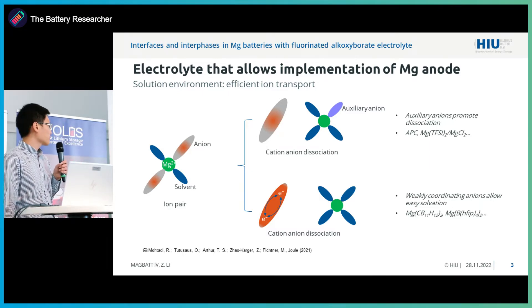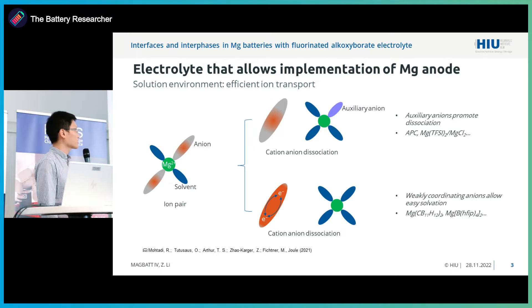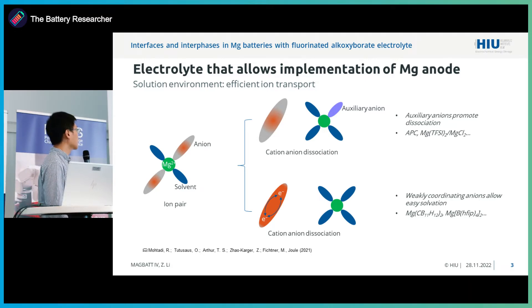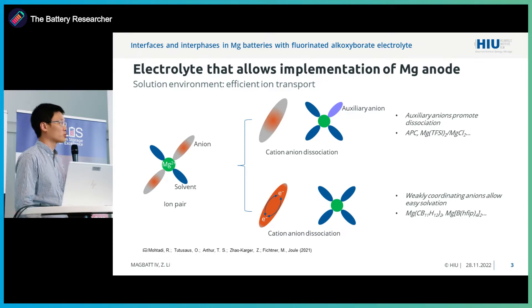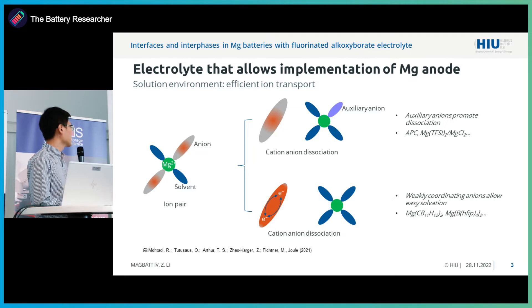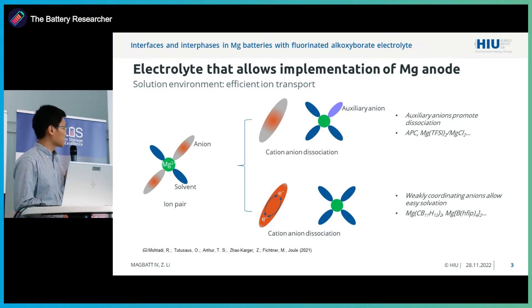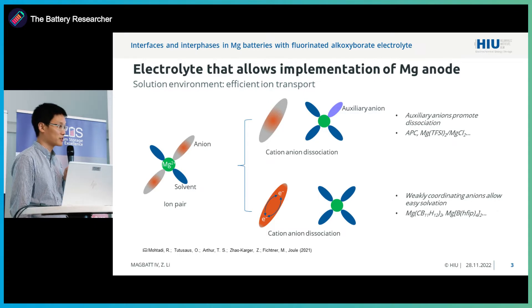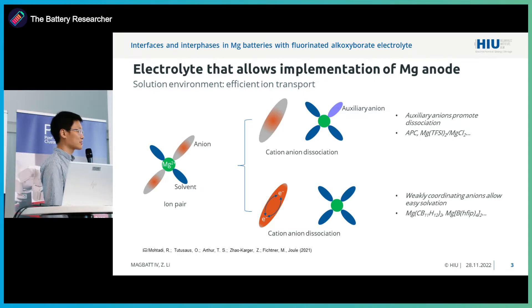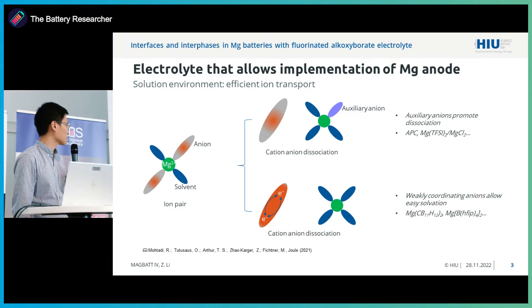In search for a chloride-free, or less corrosive electrolyte, one strategy that has been demonstrated successful is to introduce so-called weakly coordinating anions. In this concept, we have anions that interact more weakly with magnesium than the solvent interaction. This leads to the development of the magnesium carborane electrolyte, which has shown very nice coulombic efficiency, as demonstrated on the first day by the Argonne Center. We also have the magnesium fluorinated borate electrolyte that I am going to talk about today.